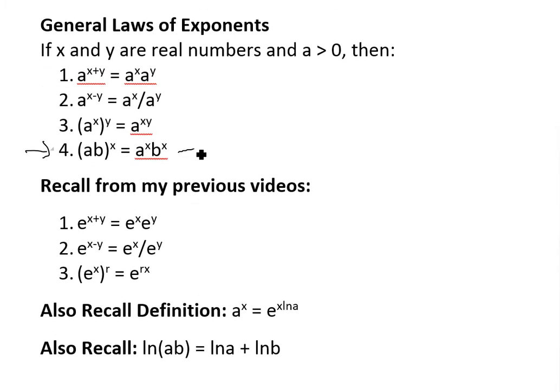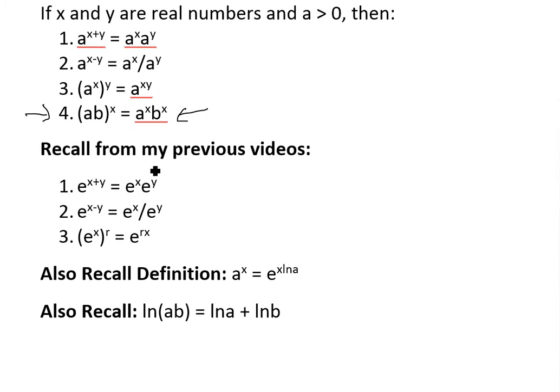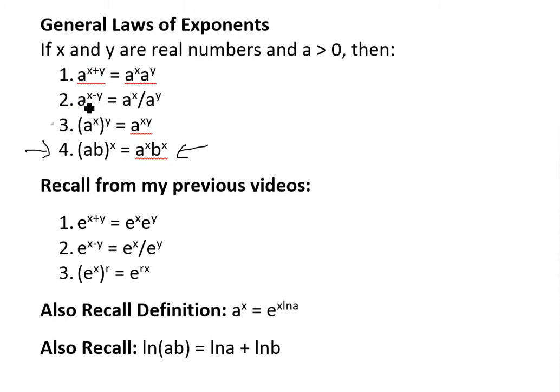Now before I prove this, I'm going to quickly recall from my previous videos on these proofs on the laws of exponents with the base of the exponential function. This one is in general, which is anything that's greater than zero. First law is e to the power of x plus y equals e to the power of x times e to the y. If it's a minus, you divide. And if it's a bracket like this, then you could just put it inside. So these are the first three for base e, which I proved in my earlier videos.